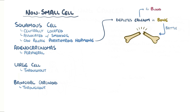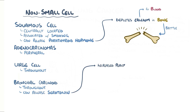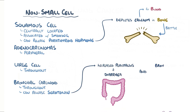A paraneoplastic syndrome specific to carcinoid tumors is carcinoid syndrome, which causes the secretion of hormones — particularly serotonin — leading to increased peristalsis and diarrhea, as well as bronchoconstriction, which causes asthma.